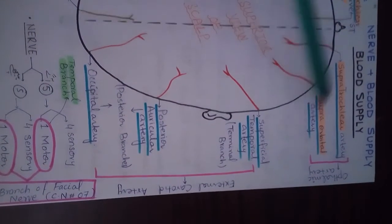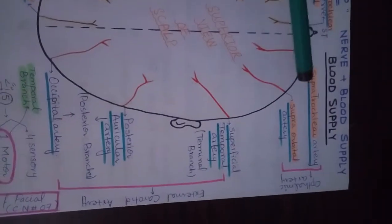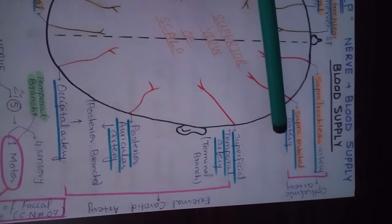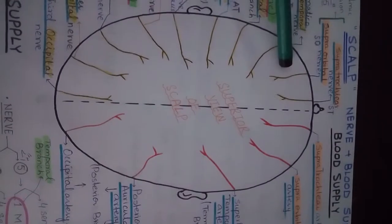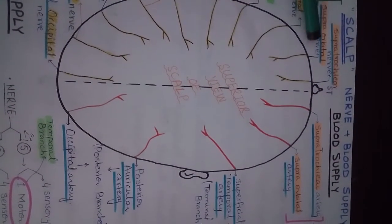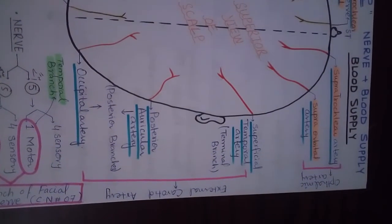These two are branches on the anterior side of the skull. Notably, the corresponding nerves share the same names — Supra-trochlear nerve and Supra-orbital nerve. However, since this is a blood supply video, we will not discuss the nerves further and will return to blood supply.